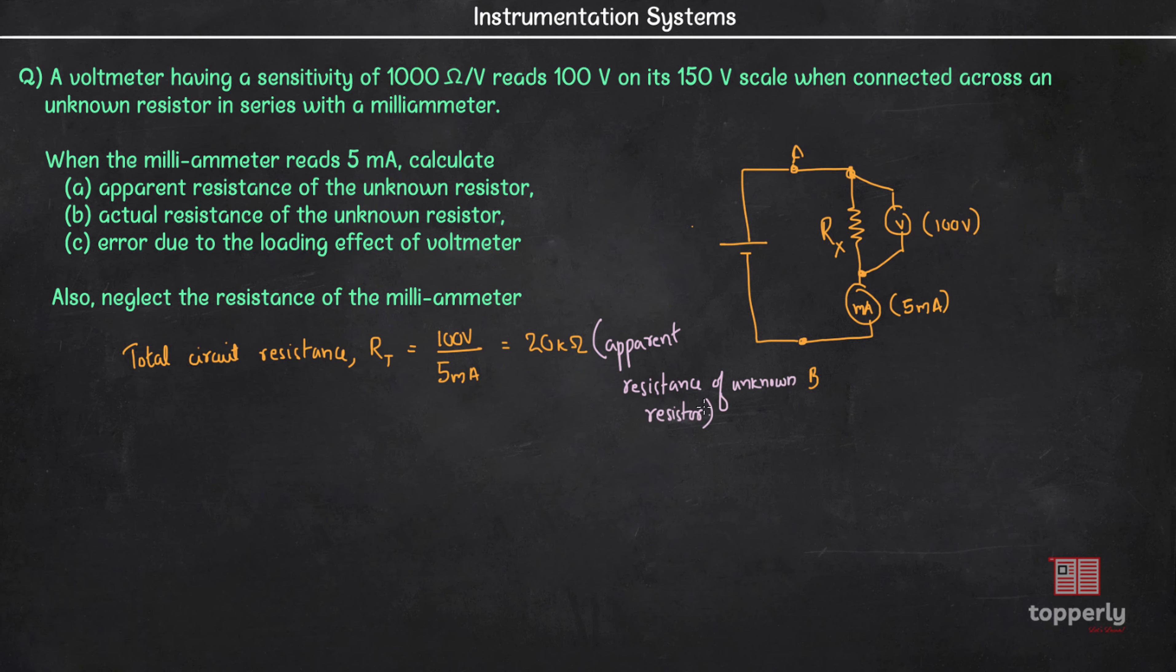Now it is asked to find the actual resistance of the unknown resistor. That is, we are asked to find the value of Rx. We know that the voltmeter has an internal resistance Rv and this Rx and Rv are parallel. This 20 kOhm is the effective resistance due to Rx and Rv. Since Rx and Rv are in parallel combination, we can write 1 by 20 kOhm is equal to 1 by Rx plus 1 by Rv.